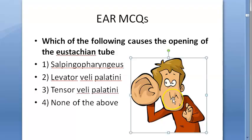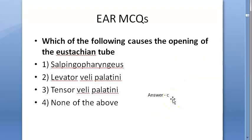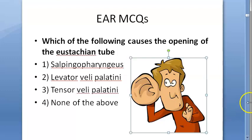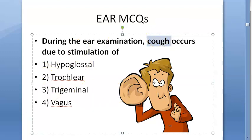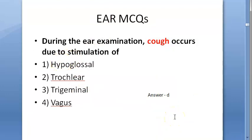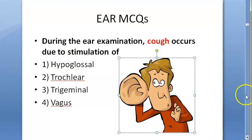During ear examination, cough occurs due to stimulation of which nerve? When you are examining the ear, a cough occurs — why does it occur? The answer is D, the vagus nerve.